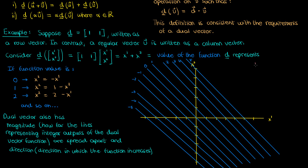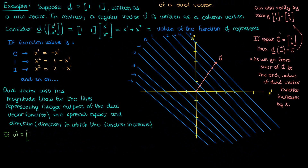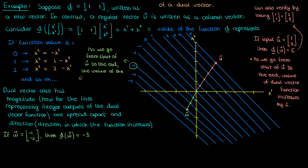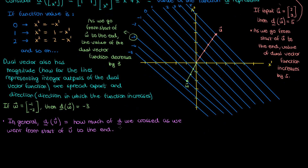If I have an input vector u of components 2 and 3, then applying my dual vector d to u gives 5 as the answer. Drawing u on my graph, as I go from the start to the end of vector u, the dual vector function value increases from 0 to 5. For another example, if my input w is negative 1 and negative 2, then d applied to w gives negative 3, because the output decreases from 0 to negative 3 along w. In general, when d is applied to v, we get how much the dual vector d was crossed as we went from the start to the end of v.